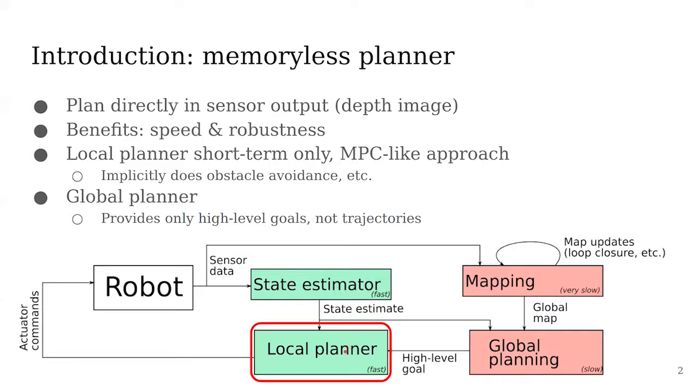Overall, we obtain state estimates, for example, position, attitude, etc., and the local planner uses that estimate along with the depth image to provide actuator commands to the robot so that it can avoid obstacles. Simultaneously, a mapping module builds a map for global planning.